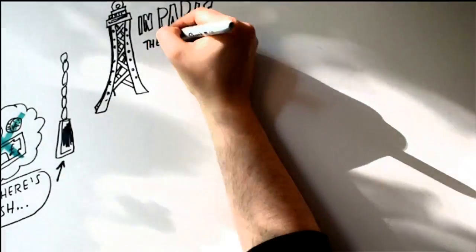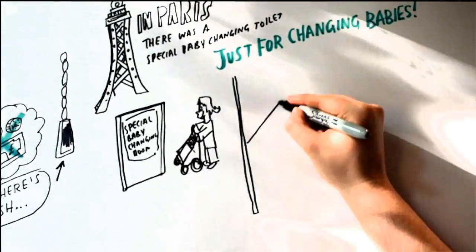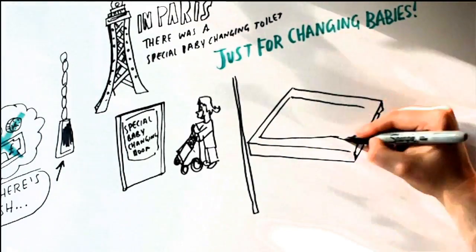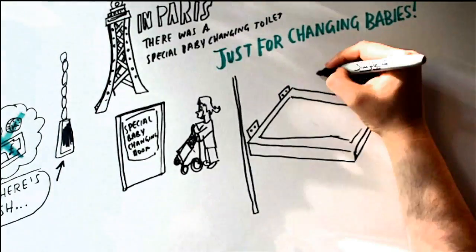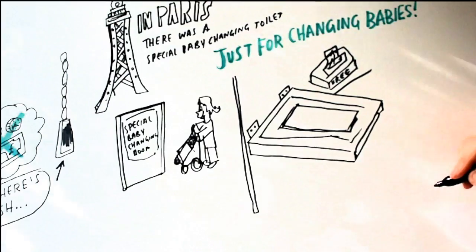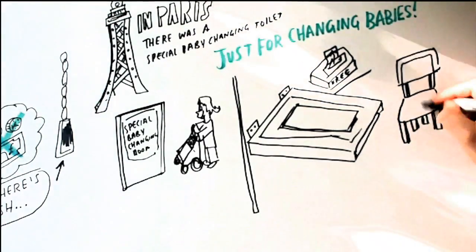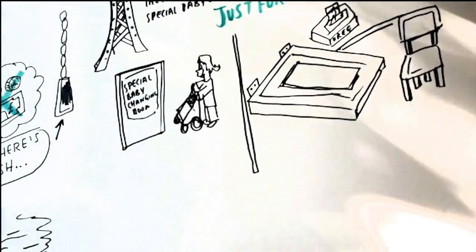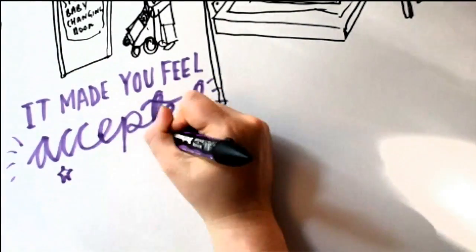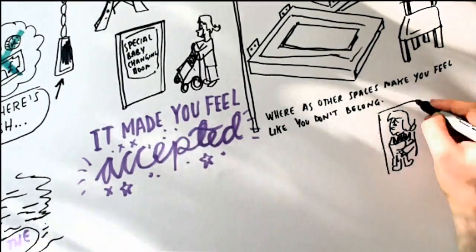In Paris on the TGV there was a special baby change toilet just for changing your baby. There was no toilet inside it, there was a nice drop down table. And then there was some wipes in there for free, and there was a cover. There was a seat if you wanted to breastfeed. It was really, I mean anything that was missing was an actual toilet. Because I think the two things do need to be together. But it really made you feel accepted. Whereas in other spaces, you just think, I'm not meant to be here. I don't know what you're supposed to do.